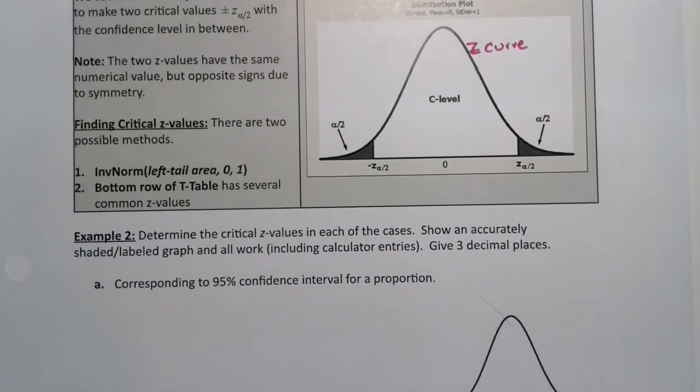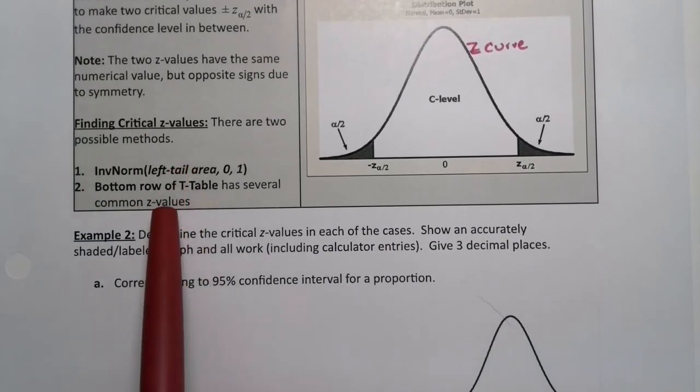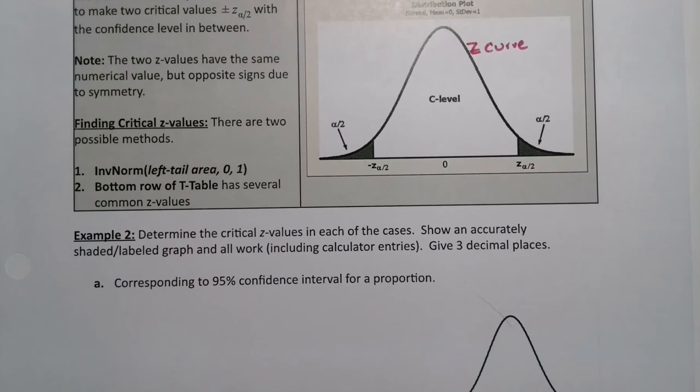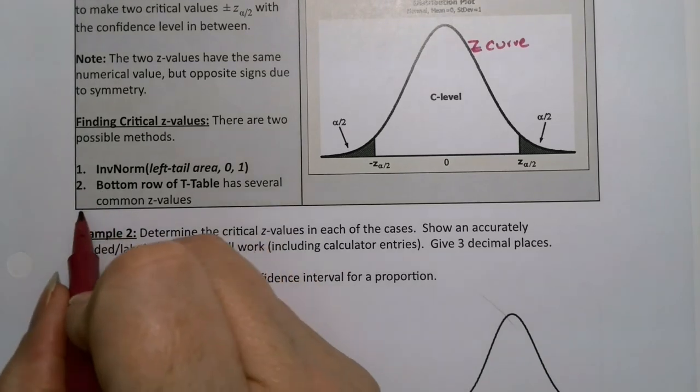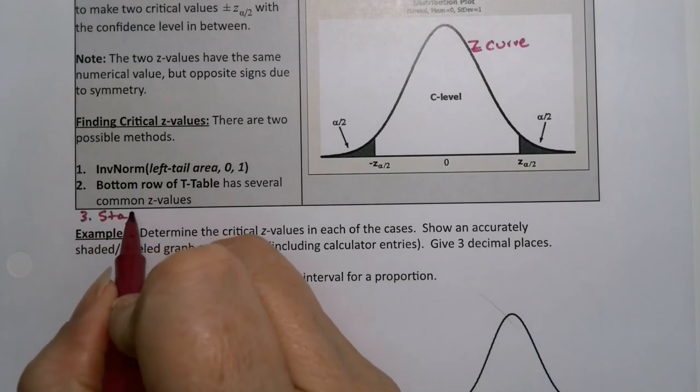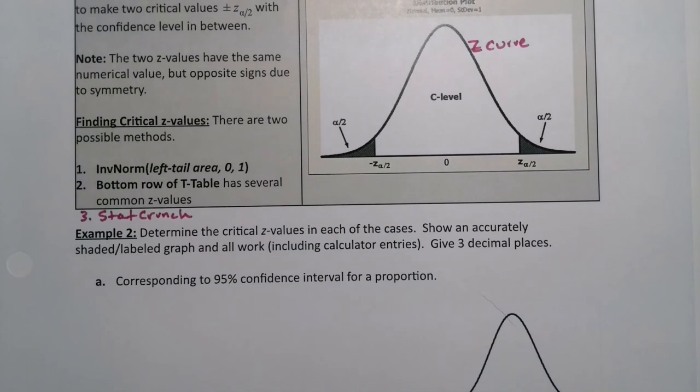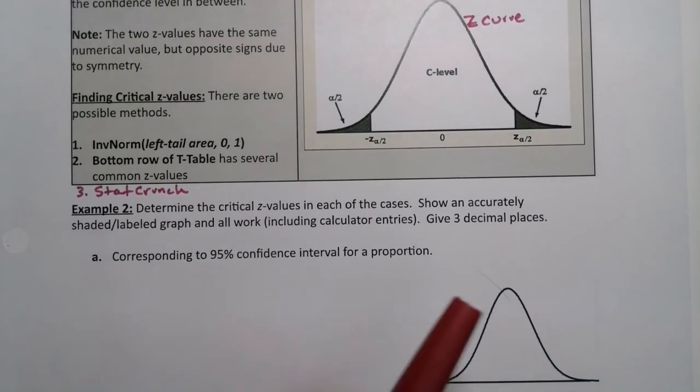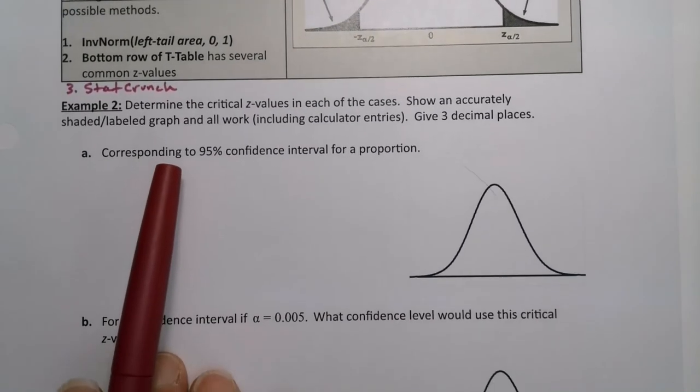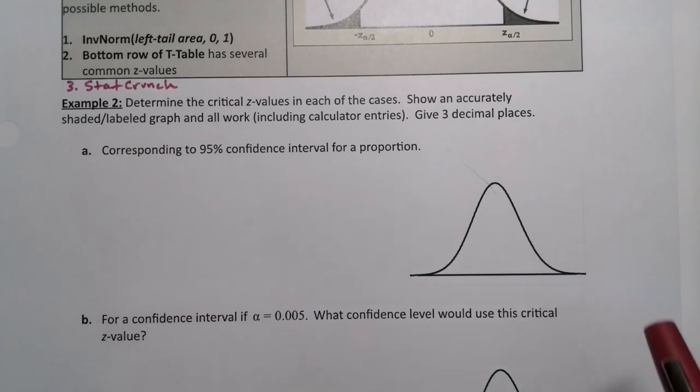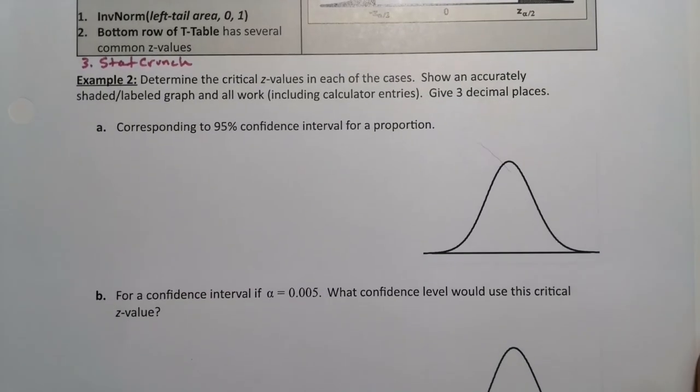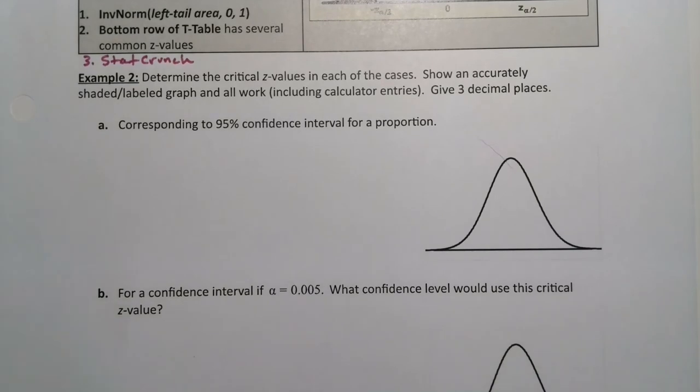Obviously we can use inverse norm, we can use the bottom row of the T table, we can use StatCrunch as well. I'll actually add that in as a third option which I'll show. I'll show all three actually. So let's do a couple examples. We want to determine the critical Z values in each of these cases, show an accurately labeled graph, and include all work.